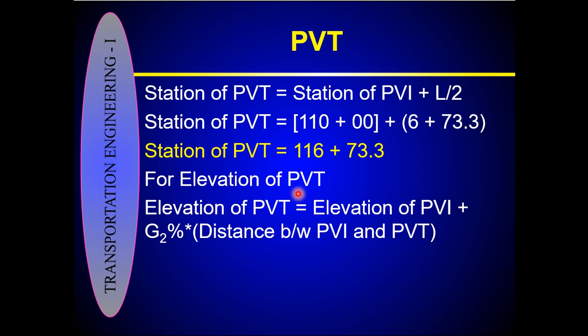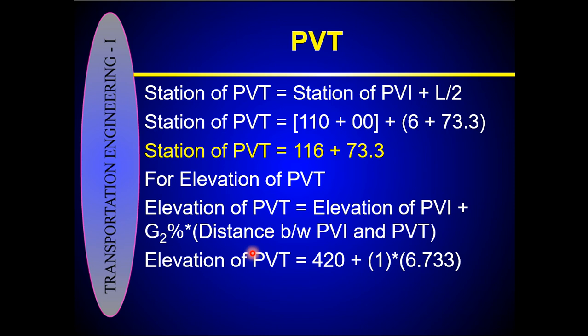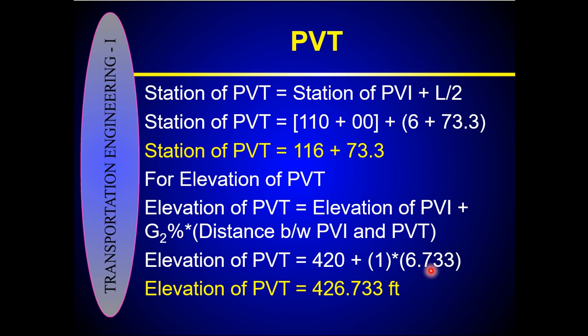For the elevation of the PVT, use: elevation of PVT = elevation of PVI + G2 × (distance from PVI to PVT). G2 = 1% and the distance from PVI to PVT = L/2 = 13.467/2 = 6.733 stations. So elevation of PVT = 420 + (0.01)(6.733 × 100) = 420 + 6.733 = 426.733 feet.